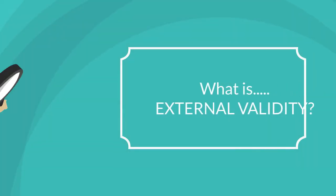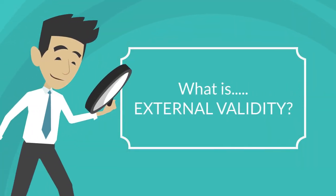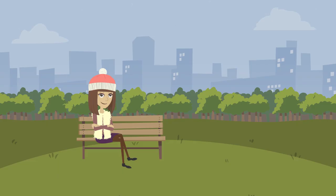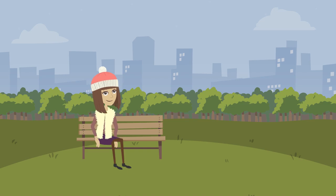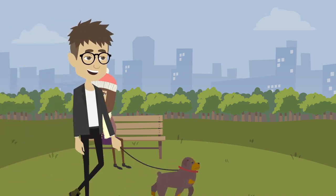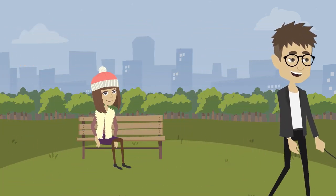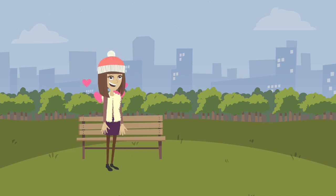What is external validity? Imagine this scenario. A lady is sitting on a park bench when a stranger walks by and catches her interest. She would like to make a good impression on him next time she sees him, so she decides to do some research.